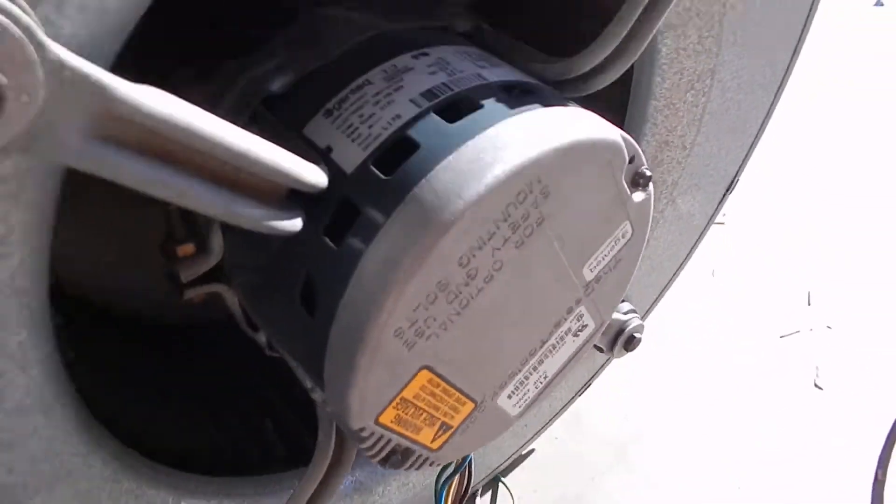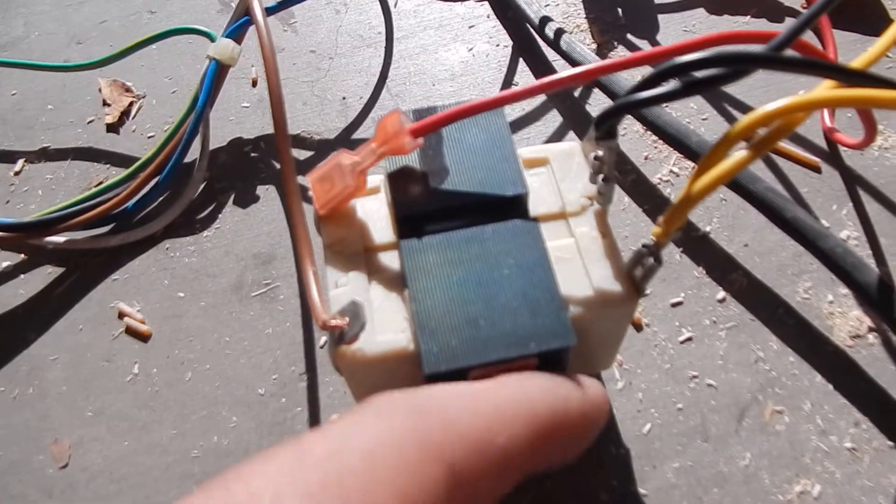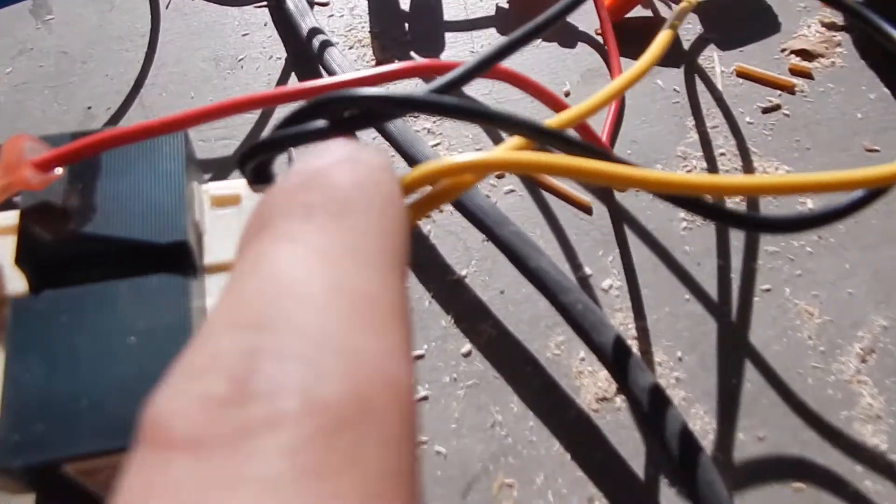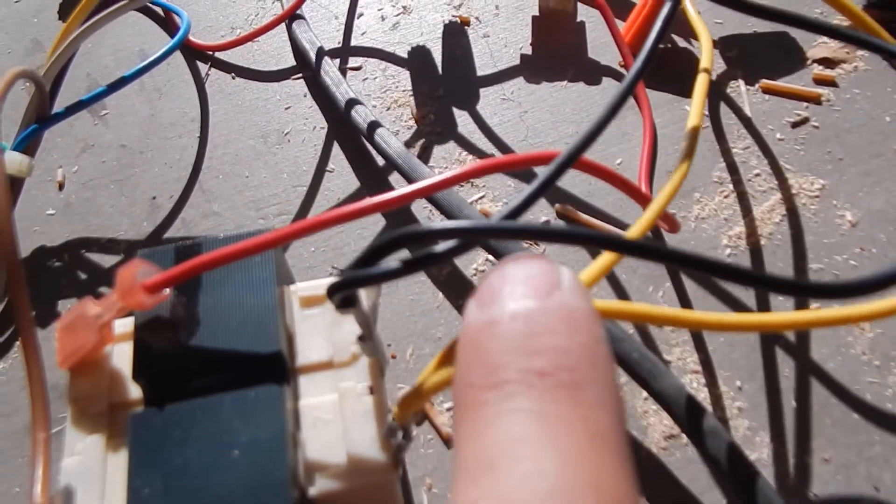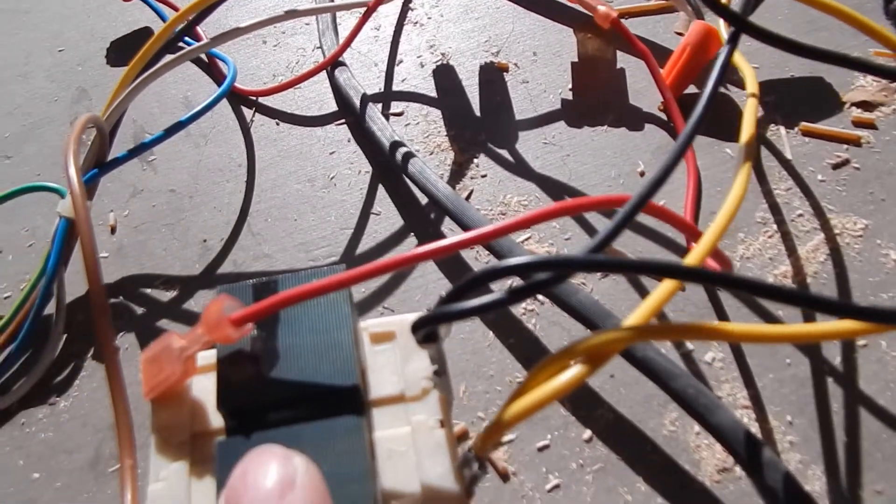So what I have going on here: I have the transformer that came out of the same unit, the same air handler. Here is my neutral, this yellow is my neutral. This is my hot 120 going into the transformer.